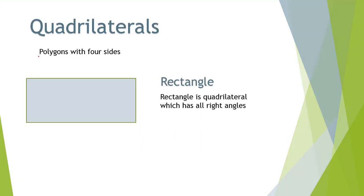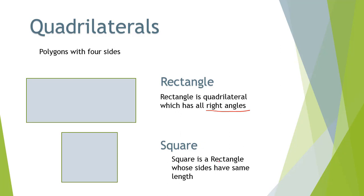Quadrilaterals are polygons with four sides. A rectangle is a special quadrilateral which has all right angles. But wait, a square also has all right angles. So what's the difference? A square is a rectangle whose sides have the same length.